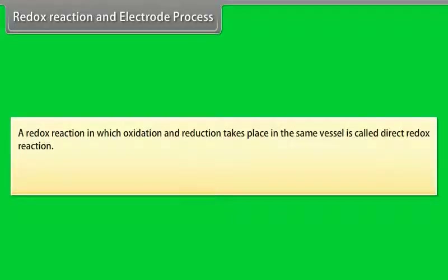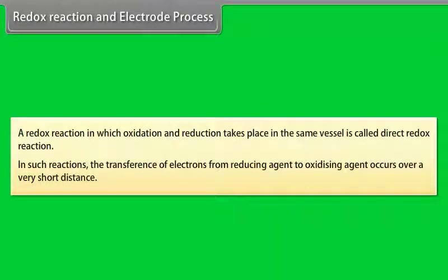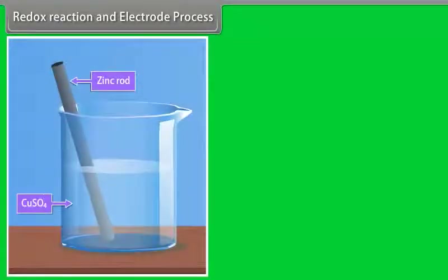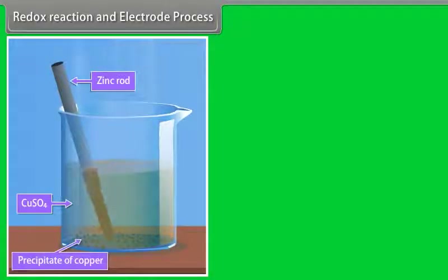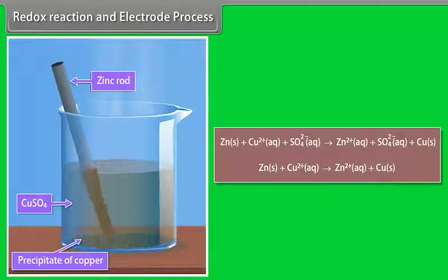Redox reaction and electrode process: A redox reaction in which oxidation and reduction take place in the same vessel is called a direct redox reaction. The transference of electrons from reducing agent to oxidizing agent occurs over a very short distance. For example, when a zinc rod is immersed in copper sulfate solution, a spontaneous reaction occurs: the zinc rod dissolves and loses mass, the blue color of CuSO₄ fades, a reddish-brown precipitate of copper settles at the bottom, heat is evolved, the solution remains electrically neutral, and the reaction stops after some time.